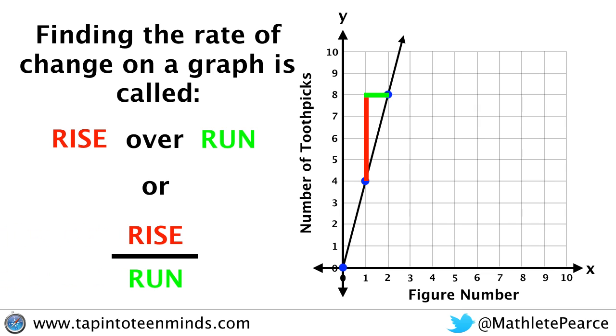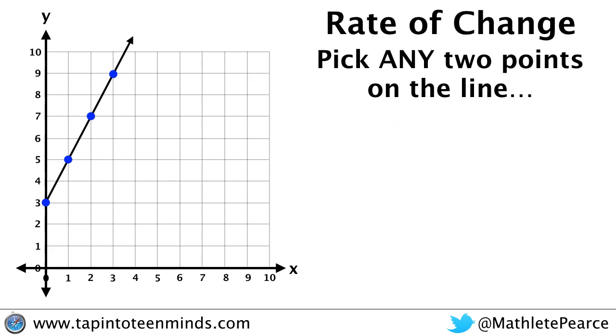Some people would write it as a fraction rise over run. Let's take a look at our examples here. We have a pattern that begins at three and we can see the next point is one comma five. Then we have two comma seven and three comma nine.